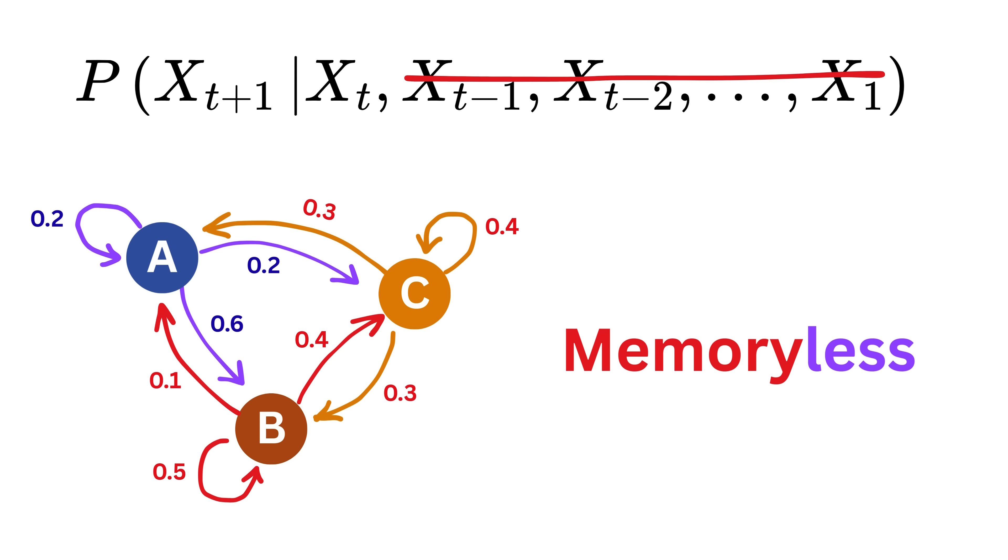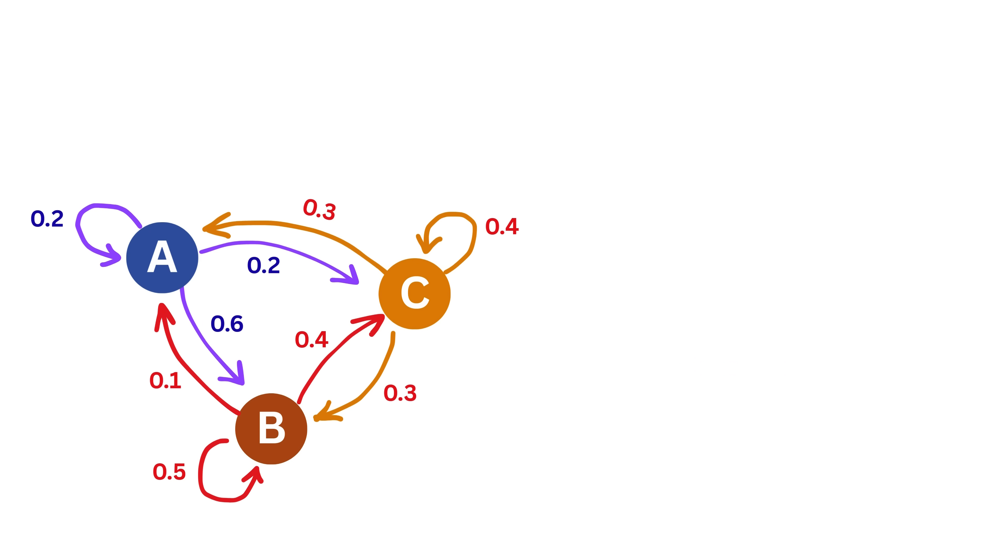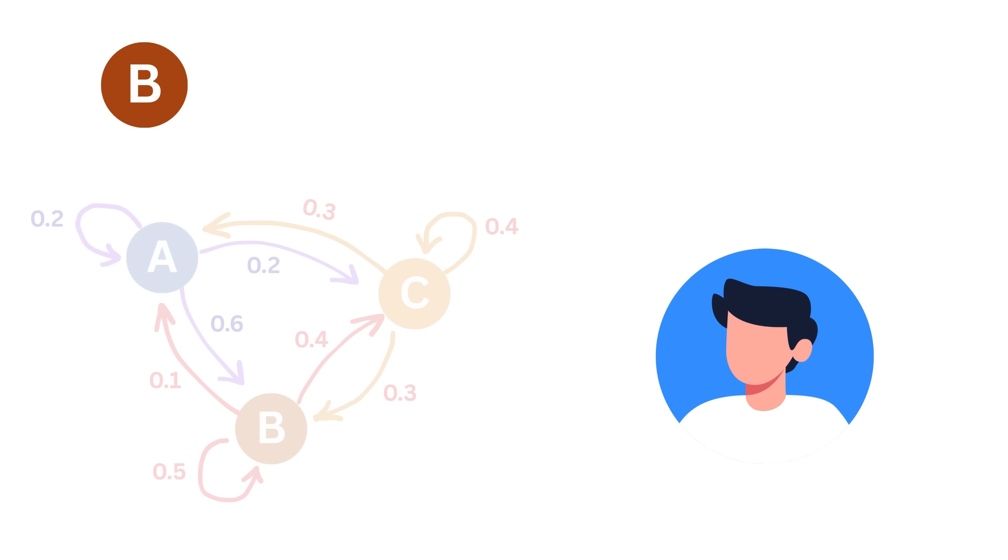So here, we don't have to track a long sequence of actions. Let's understand this better. Suppose a user visited page B first, then page A, and now they are on page C. What's the probability that they will go to page B next?